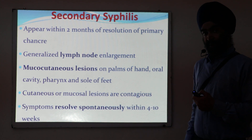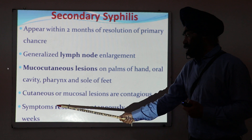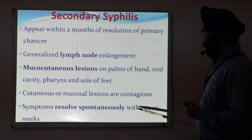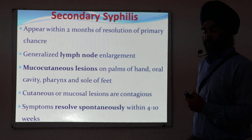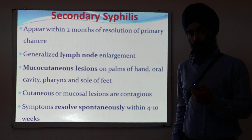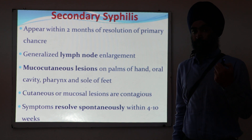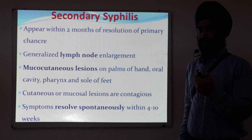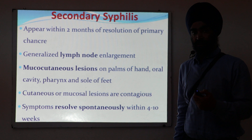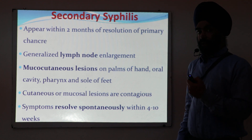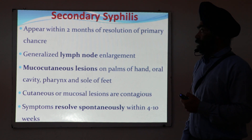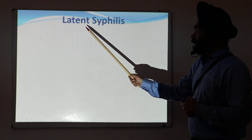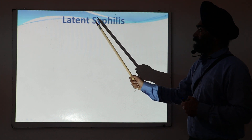Like primary syphilis, the symptoms of secondary syphilis will resolve spontaneously within four to ten weeks — within one to two months, the symptoms will disappear again. The person will think both primary and secondary syphilis have resolved and there is no symptom, and thus they enter into the latent syphilis phase.